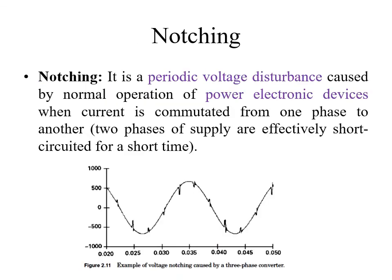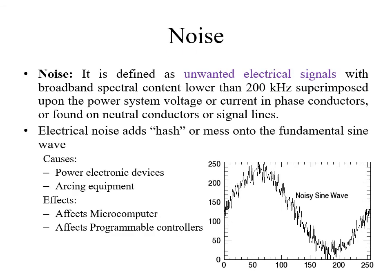Notching occurs when periodic voltage disturbances appear at regular intervals — you can see notches at particular equal intervals of time. This type of disturbance is called notching and normally occurs due to commutation from one phase to another. Noise refers to all other unwanted electrical signals that cause disturbance to the sine wave — any sine wave distortion other than DC offset, harmonics, interharmonics, and notching is called noise. It may be caused by power electronic devices and arcing equipment.